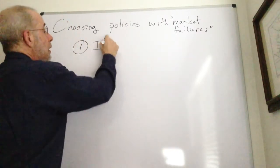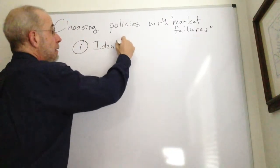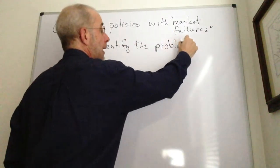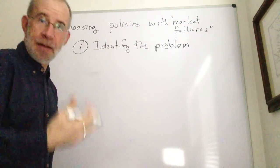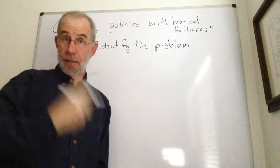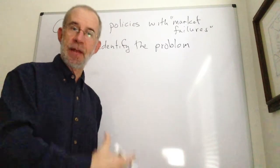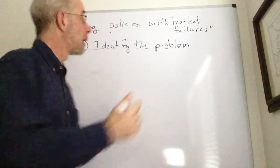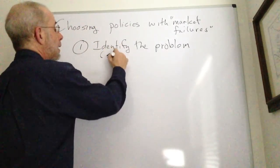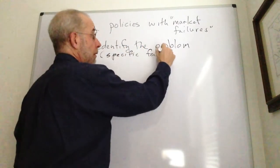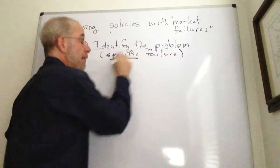So first, obviously, you have to have an identification of the underlying problem. Where is the difficulty? Where is the specific market failure? And when I say specific failure, I really want to underline the specific part.